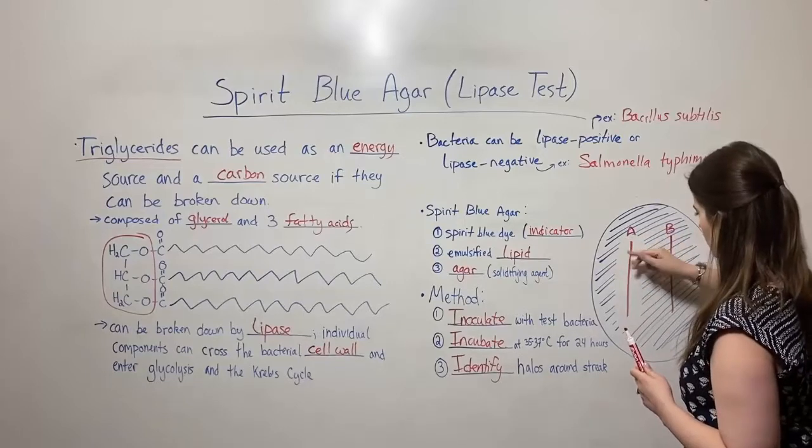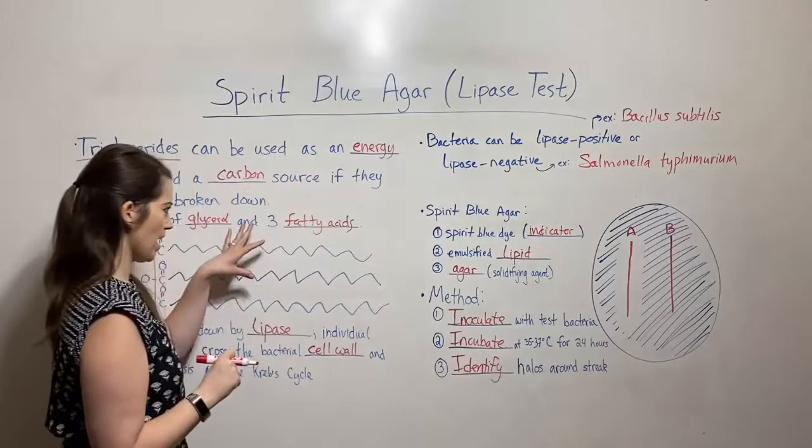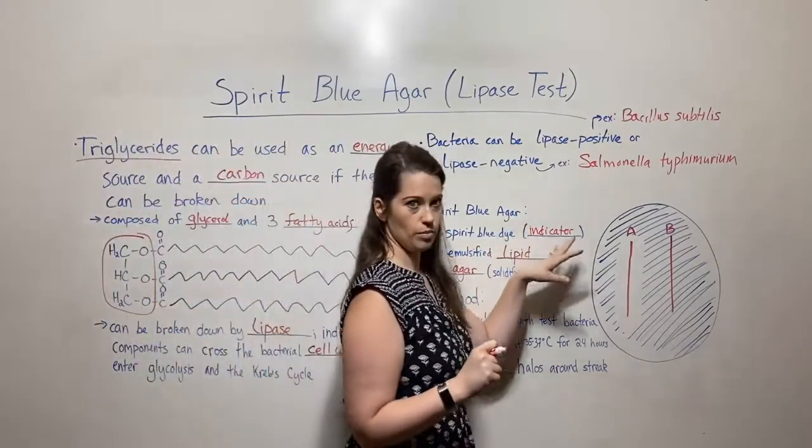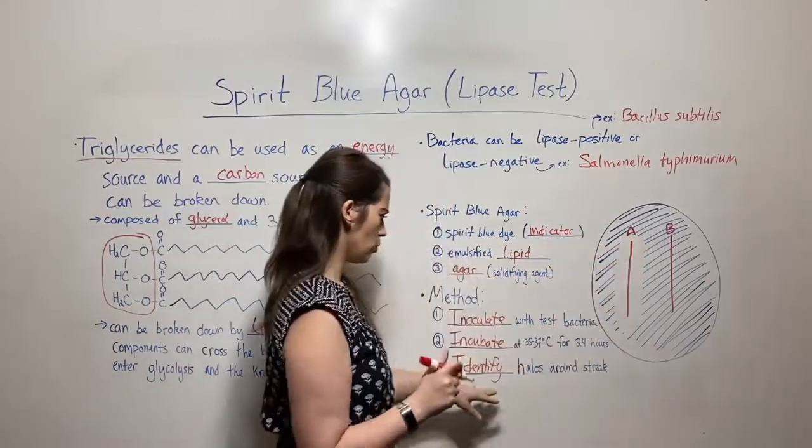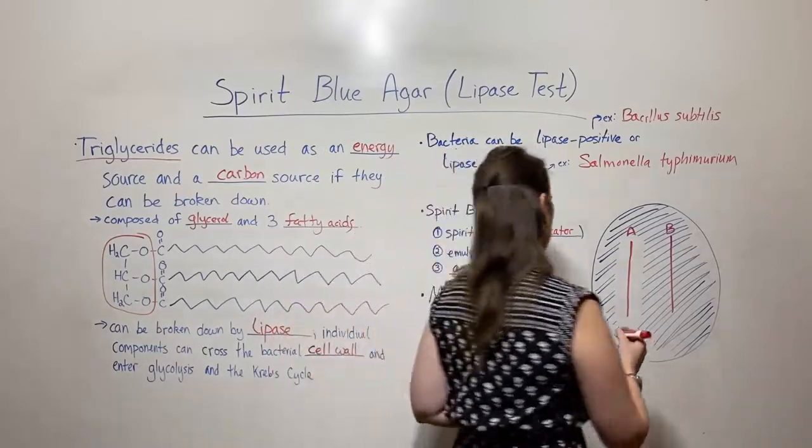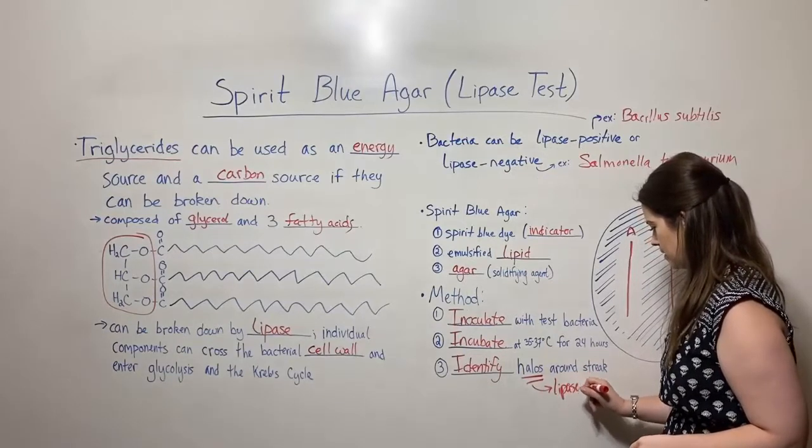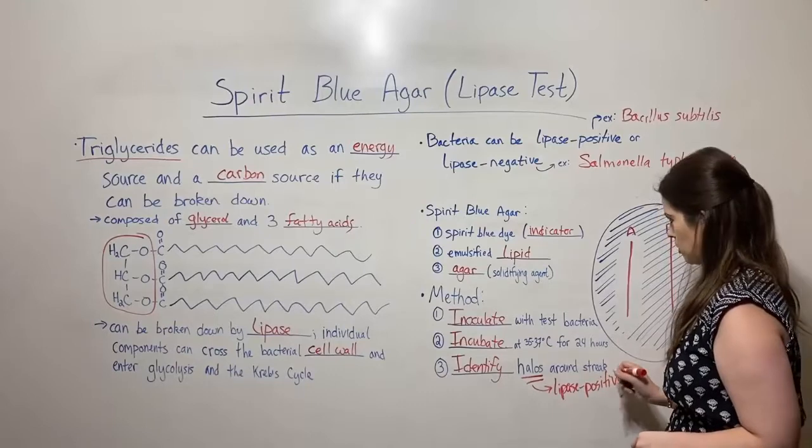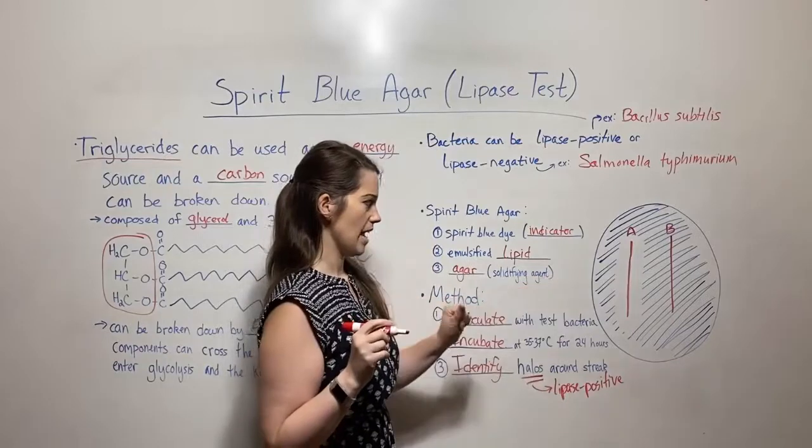You've got a halo around it, and that is because they have been able to break down the triglycerides. That results in a change to the spirit blue dye, that indicator, that results in this clearing halo. So where you see a halo, that indicates that species is lipase positive. Lipase positive, meaning that it has lipase, it can break this down. That's where you get a halo.